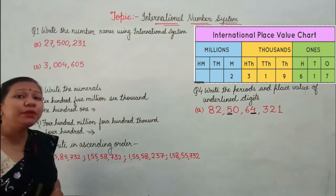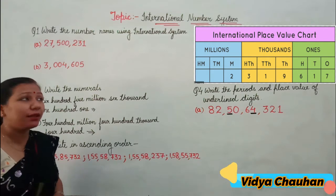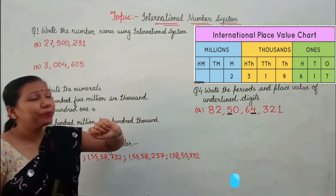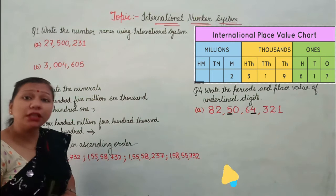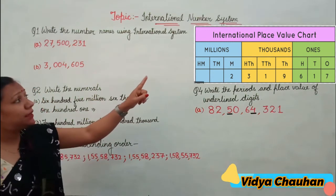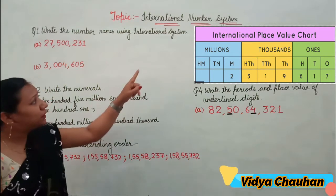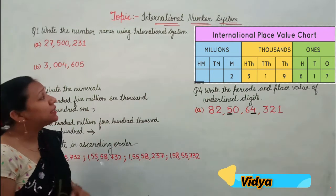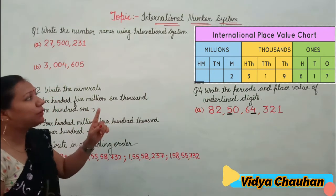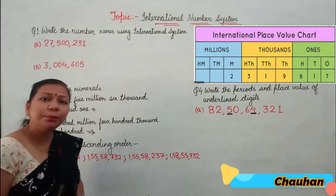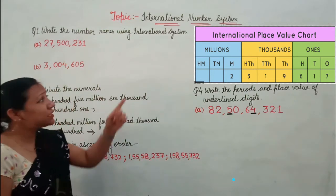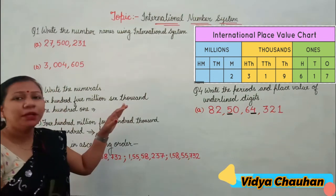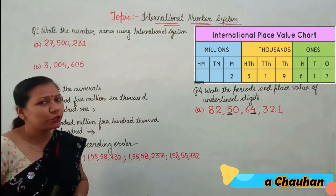There are groups of three digits together. The first group is the ones group, which contains ones, tens, and hundreds. The second group is the thousands group, containing thousands, ten thousands, and hundred thousands. The third group is millions — one million, ten million, and hundred million. We have already discussed this in our live class, so I hope the international number system is clear to all of you.